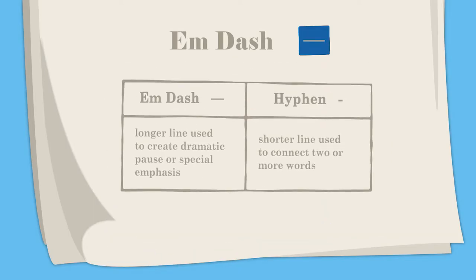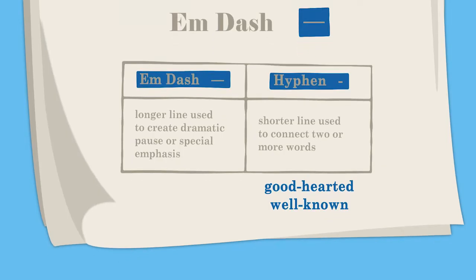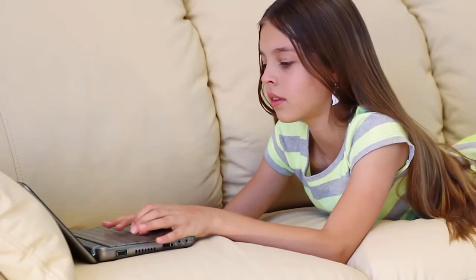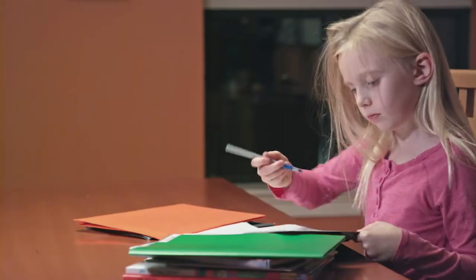The easiest way to tell the difference between em dashes and hyphens is to look at the length of the mark. An em dash is a longer line used to create dramatic pause or special emphasis in sentences. A hyphen is a shorter line that is used to connect two or more words. For example, "good-hearted" and "well-known" both contain two words — as compound adjectives, both pairs of words are connected by hyphens. Em dashes provide additional detail by stopping the flow of the sentence to ensure the reader pays close attention to the information within the non-restrictive element.